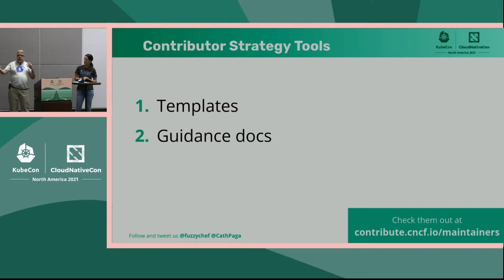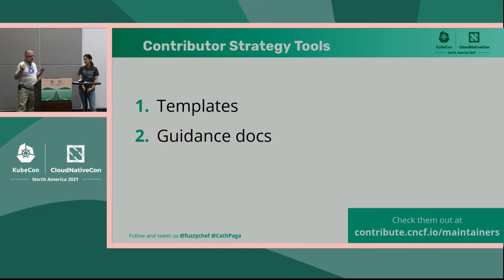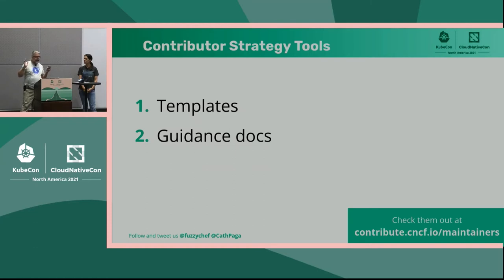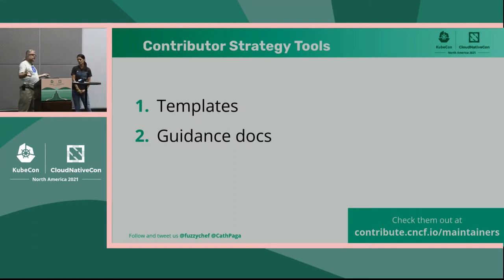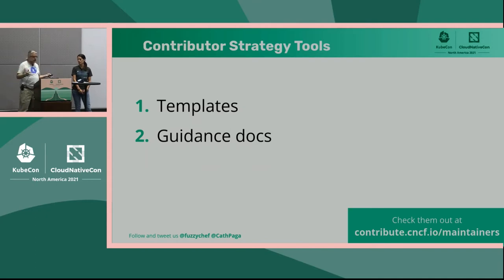In terms of tangible products we have for you, the TAG primarily produces two things. One is templates that you can copy for your project and use for project paperwork. The other is guidance documentation — advisories, guides on how to get new contributors, how to set up governance, and that sort of thing. Basically advice for running your project.